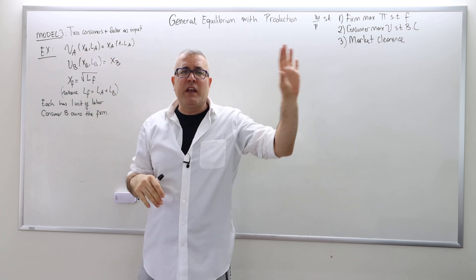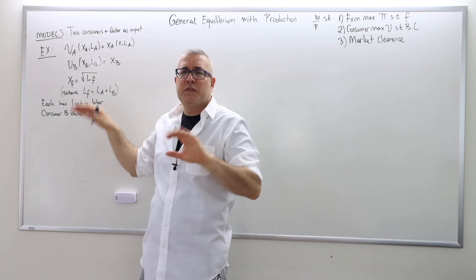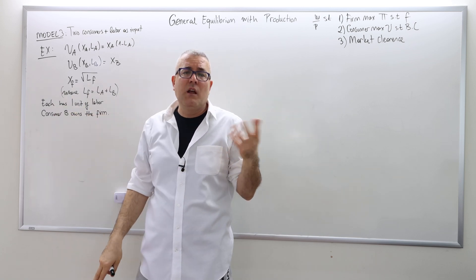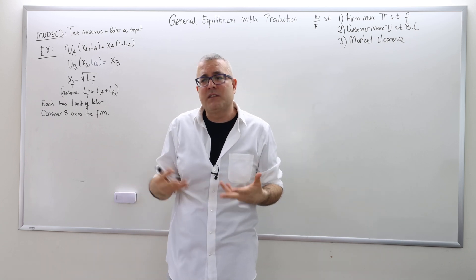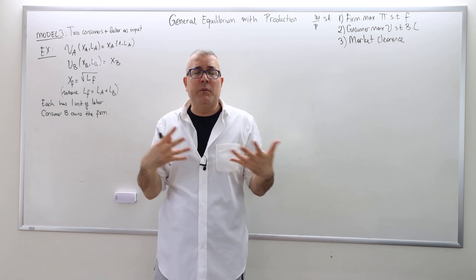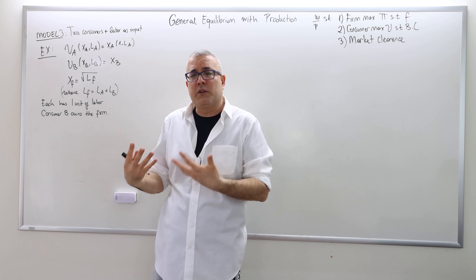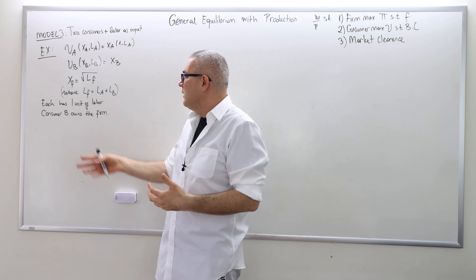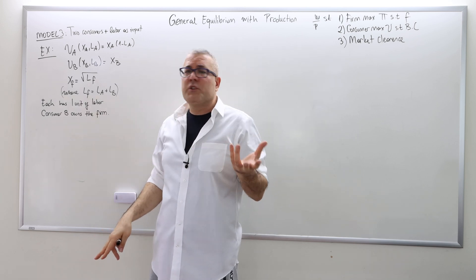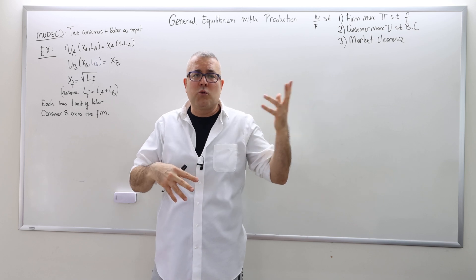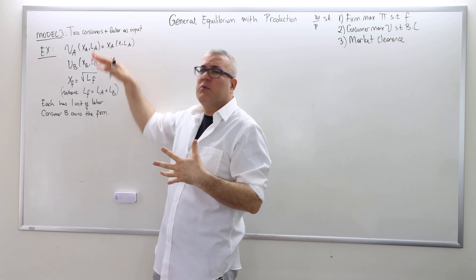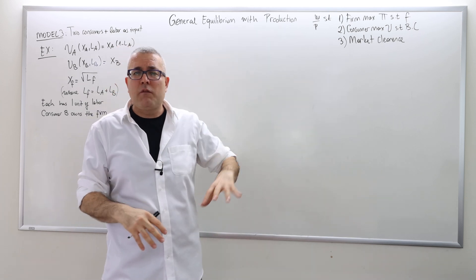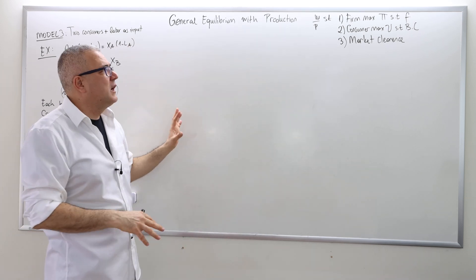You can change the utility functions and get another example. You can change the production function, the total amount of inputs — so rather than one, one agent has one unit of labor and the other has half a unit. Or you can change the ownership of the firm 50-50, one quarter, three quarters. That gives you a different question and different answer. But the way we solve all of those examples will be exactly the same.